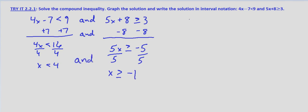So how do we graph this? Well, let's start off. We'll make a separate graph for each part of the compound inequality. So let's look at 4x minus 7 is less than 9 first.